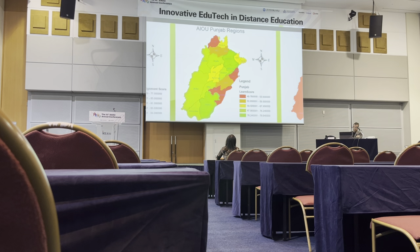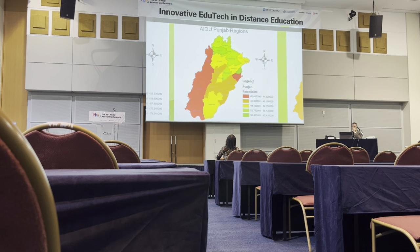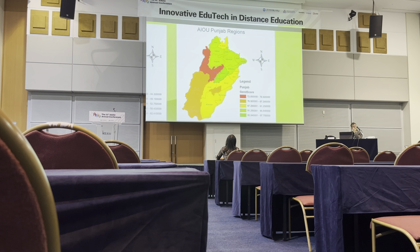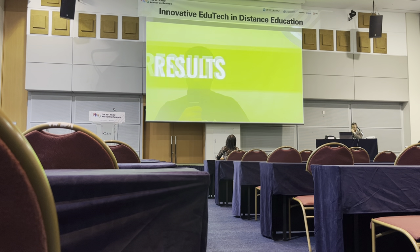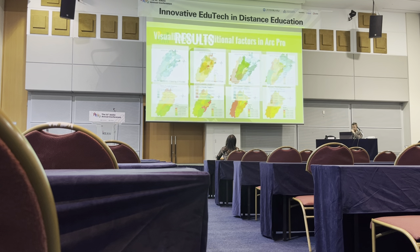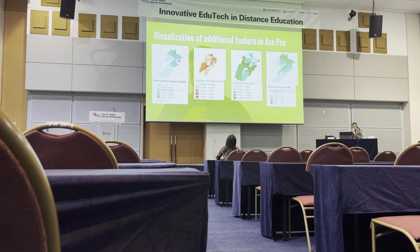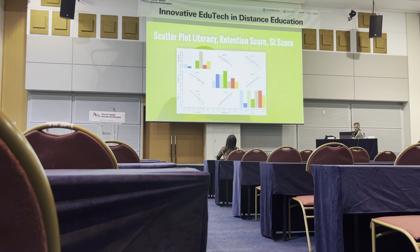Looking at other educational indicators from external studies, the overall learning score of Punjab also shows a spatial pattern. The retention score shows a pattern as well, and the gender score likewise reveals a pattern. Correlating these patterns with additional indicators — the social domain, COVID cases, energy index, and HDI index — every factor has its own spatial pattern as well.